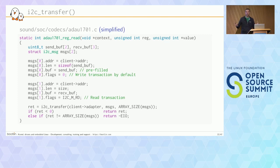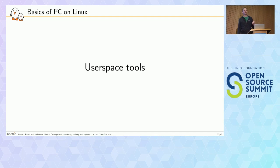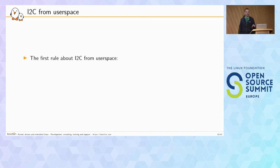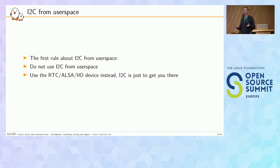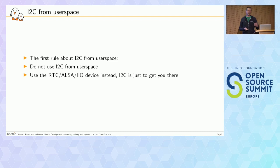That's the overall picture of how to write a driver for an I2C-connected device. Now let's move to user space. The first rule about using I2C from user space is: do not use I2C from user space. I2C is a communication bus meant to connect the CPU to some external chip which provides some functionality — an RTC, an audio codec, or whatever. You should use that higher-level functionality, which has a standardized interface. But still, there are valid use cases for using tools in user space.